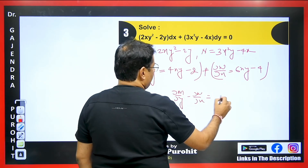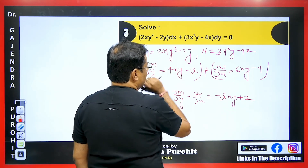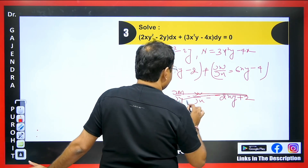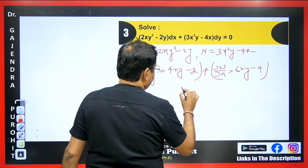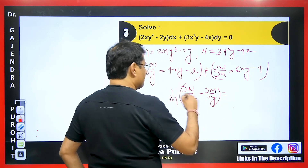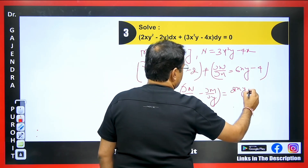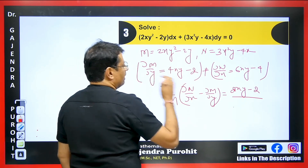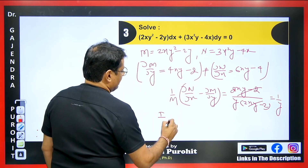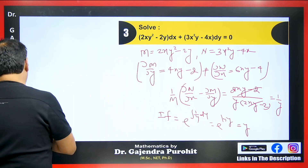The result −2xy + 2 divided by N = 3x²y − 4x does not simplify to a function of x alone. So we try (∂N/∂x − ∂M/∂y)/M instead: (6xy − 4) − (4xy − 2) = 2xy − 2, divided by M = 2xy² − 2y. Taking y common from M gives y(2xy − 2), and 2xy − 2 cancels, leaving 1/y — a function of y. So the integrating factor is e^(∫ 1/y dy) = e^(log y) = y.